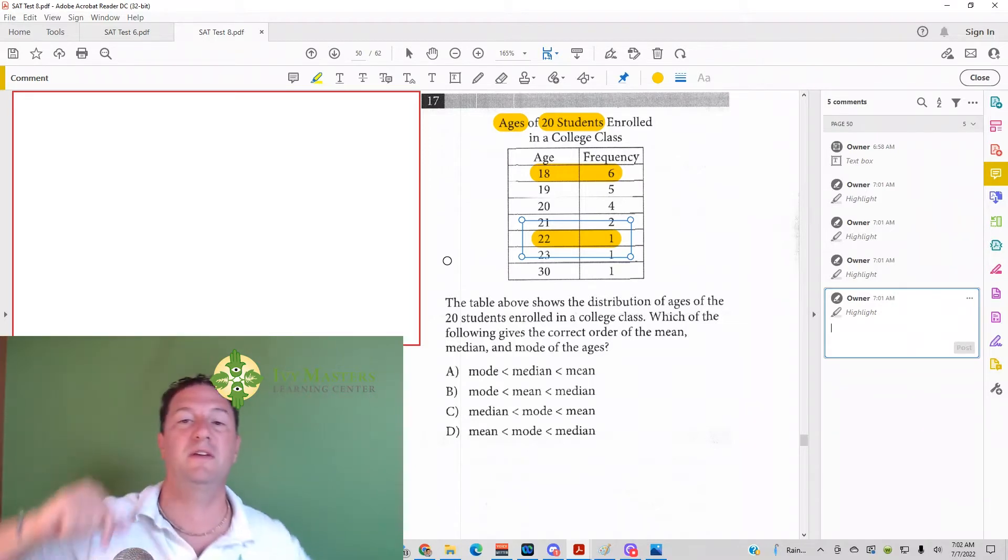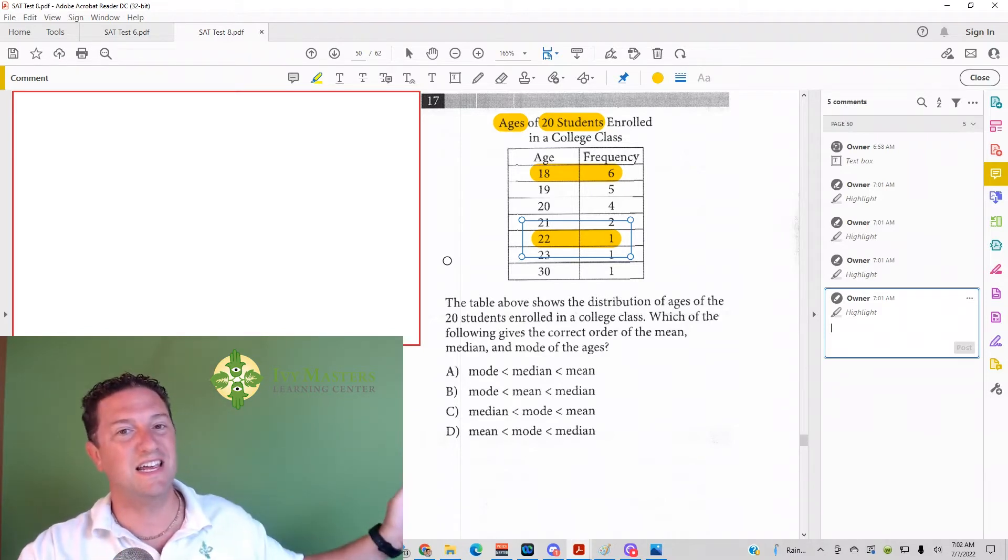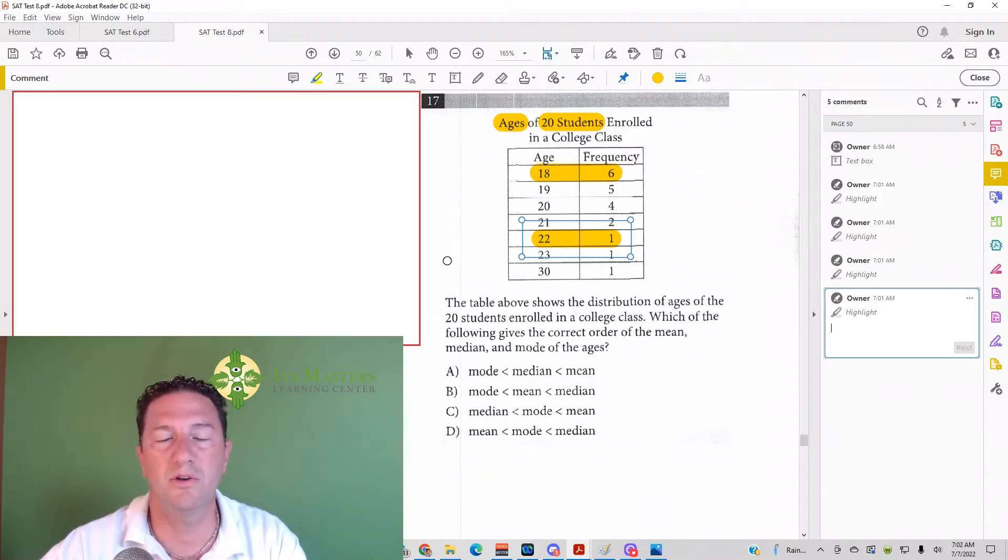Usually when you're finding the median especially, what you do is you list out all the ages or all the numbers, whatever they may be, and you cross out left, right, left, right, left, right, till you get to the middle. So to understand this, what it is, is you've got 618. So it'd be 18, 18, 18, six times, and then you'd have 519s and 420s, 221s, a 22, a 23, and a 30.